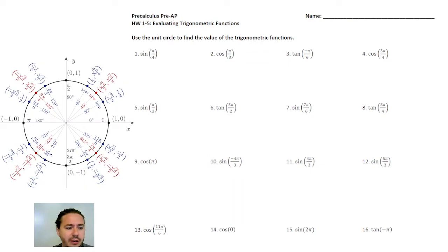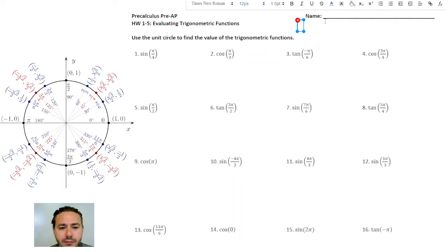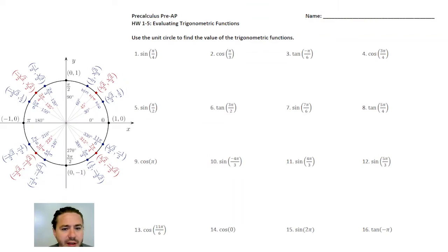Now just as a little reminder, I'm going to write this up here because we're going to keep referring back to it over and over again on all these. Let's go through the six trig functions and see exactly how you would evaluate them. So let's start with cosine actually.